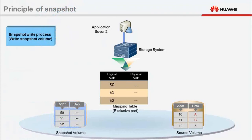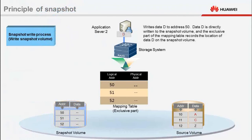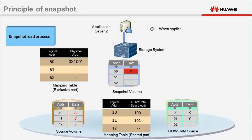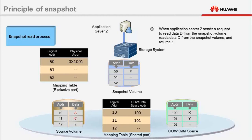When Application Server 2 sends a request to write data D to snapshot volume address 50, data D is directly written to the snapshot volume, and the exclusive part of the mapping table records the location of data D on the snapshot volume. When Application Server 2 sends a request to read data D from the snapshot volume, the storage system queries the exclusive part of the mapping table to locate data D, reads it from the snapshot volume, and returns data D to Application Server 2.